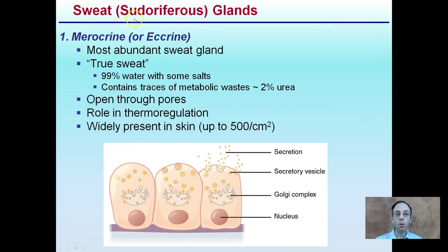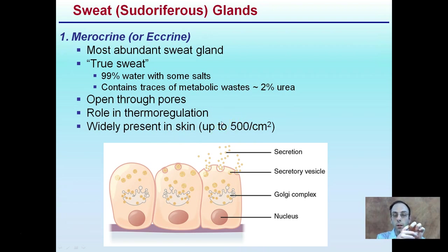Sweat glands are sudoriferous glands. The merocrine, or eccrine, glands are the most abundant sweat gland. They produce what we call true sweat — about 99% water with some salts — and contain traces of metabolic waste, up to 2% urea. They open through pores and their role is thermoregulation, helping cool the body. They're widely present in the skin — up to 500 can be located in a single square centimeter.